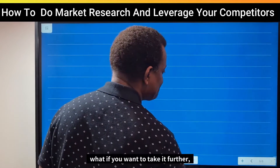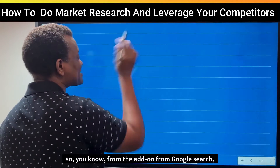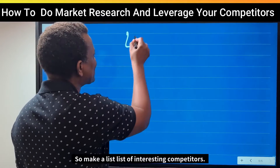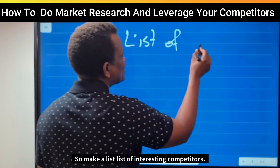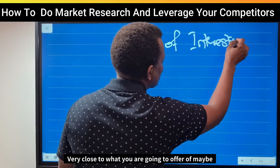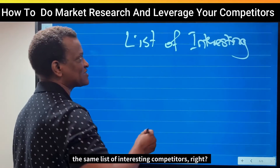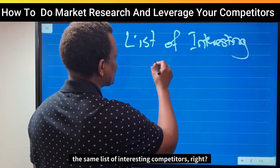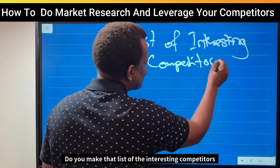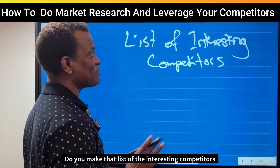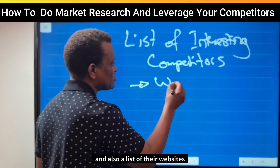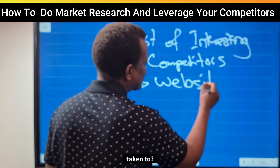Now, if you want to take it further — from the ads and from Google search, you can make a list of interesting competitors that you think are very close to what you are going to offer, maybe exactly the same. Make that list of interesting competitors and also list their websites or the funnels where you are taken to.